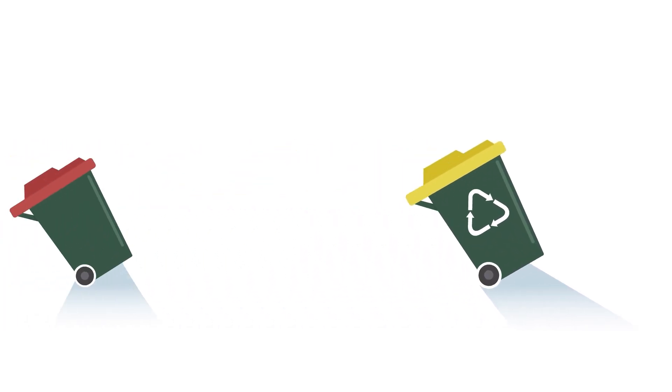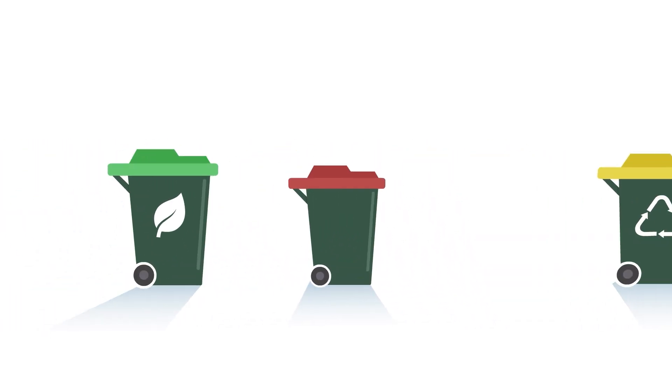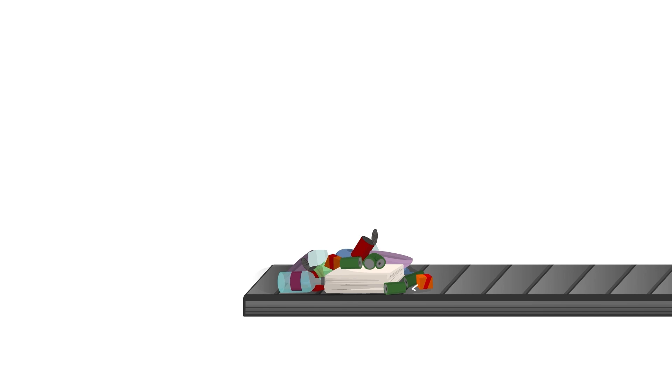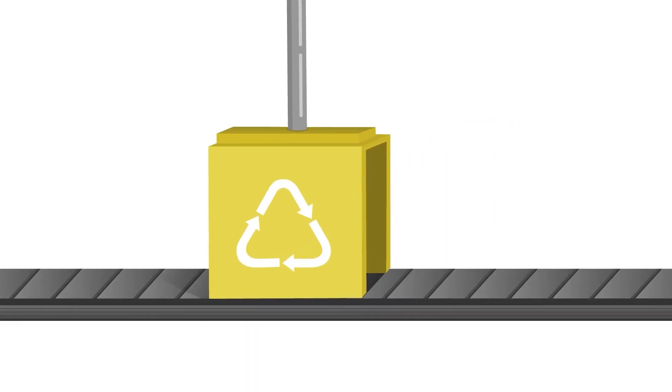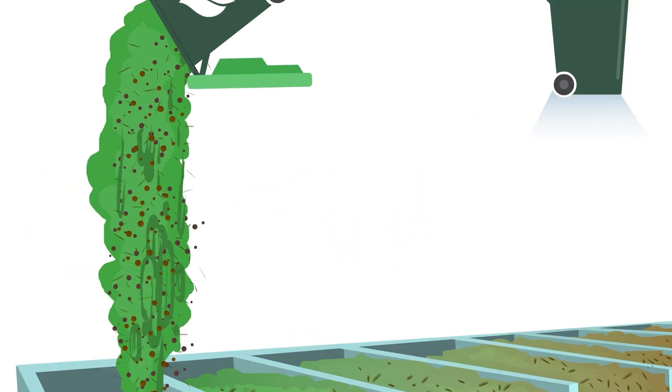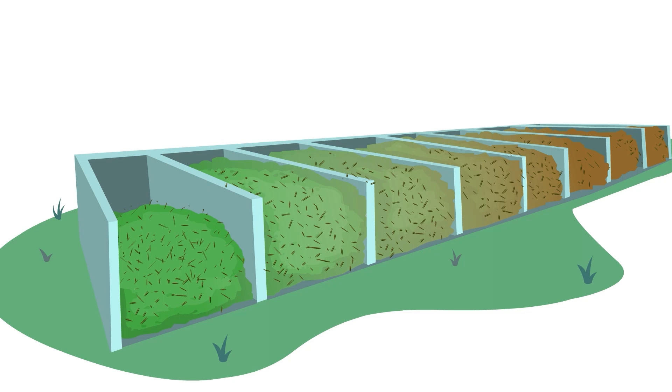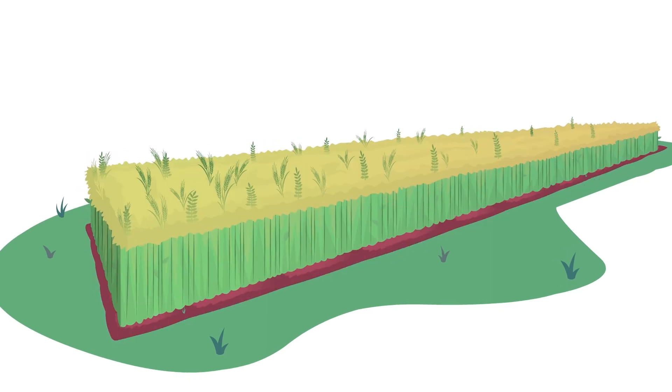Have you ever wondered what happens to your household waste? Recycling goes to facilities for sorting so materials can be reused. Green waste is composted to be used on farms and gardens, and household waste is sent to landfill to be buried.